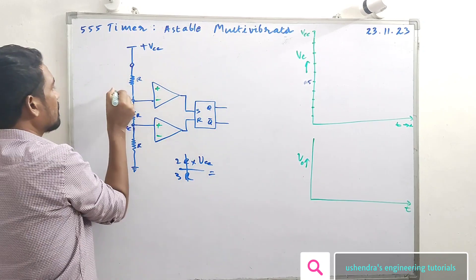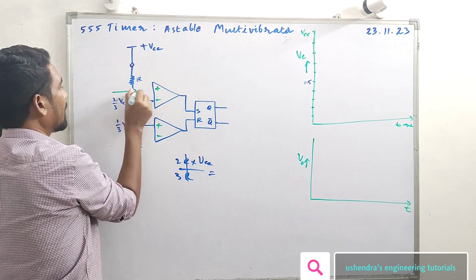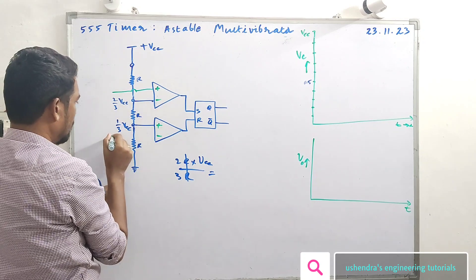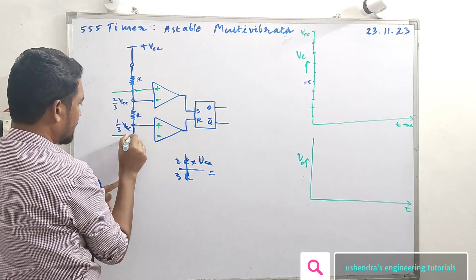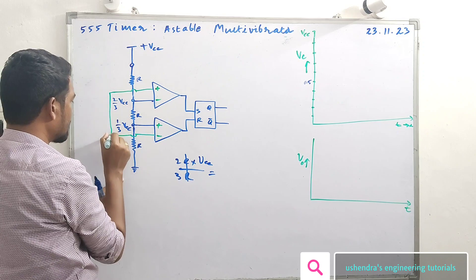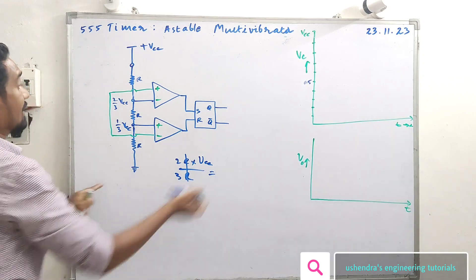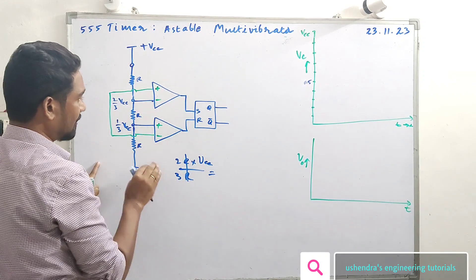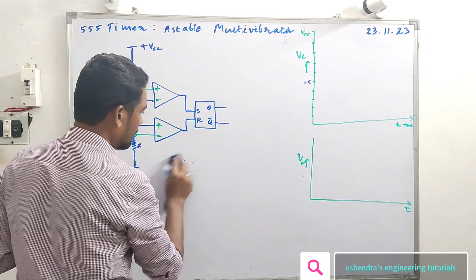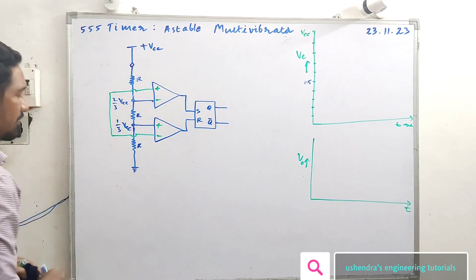As an astable multivibrator, this terminal — there is an upper comparator non-inverting and lower comparator inverting terminal joined. This is the important point. Then the connection. The external components are two resistors and one capacitor.